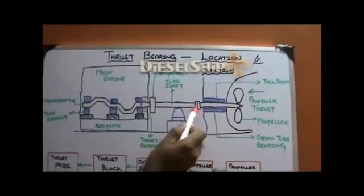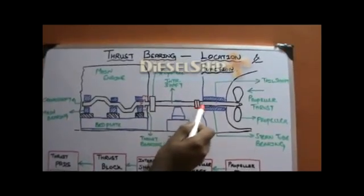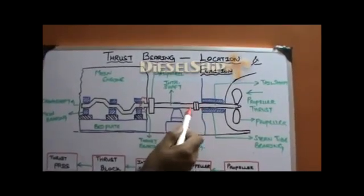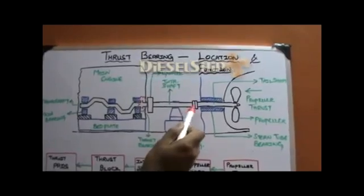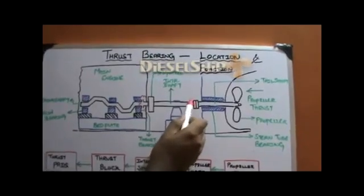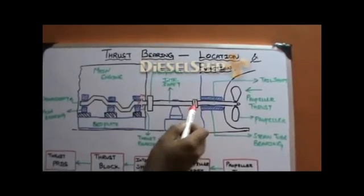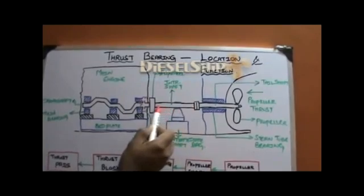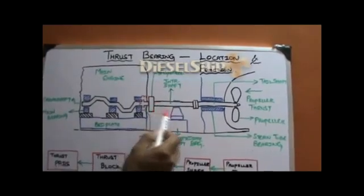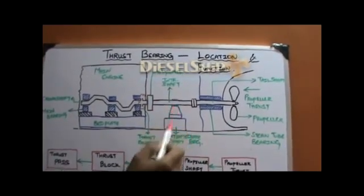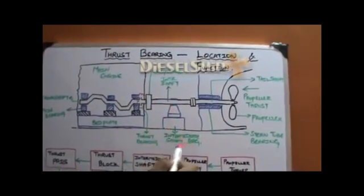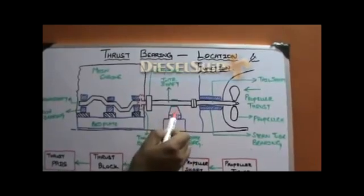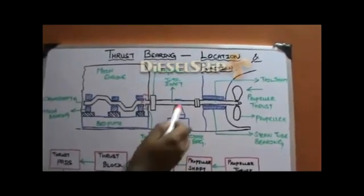Here is the connection between the propeller or tail shaft and the intermediate shaft. This is the flange, and the intermediate shaft runs over here, supported by the intermediate shaft bearing.